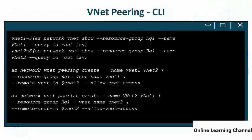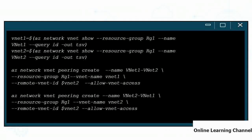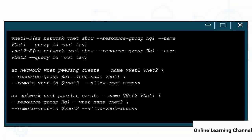For CLI VNet peering, first store each VNet's ID: 'VNet1=$(az network vnet show -g rg1 -n VNet1 --query id)' and similarly for VNet2. Then run 'az network vnet peering create' pointing from VNet1 to the remote VNet ID of VNet2. Repeat the command in the opposite direction, from VNet2 to VNet1.